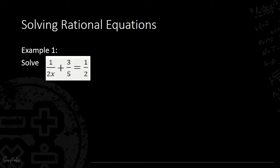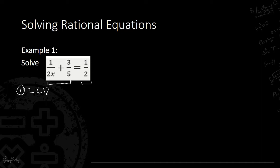Let's proceed with Example 1: 1 over 2x plus 3 over 5 equals 1 over 2. This is slightly different from our previous examples because here we have three denominators — two on the left side and one on the right side. So the first procedure is to identify the LCD.